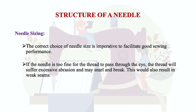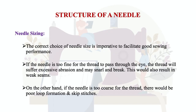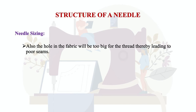If the needle is too fine for the thread to pass through the eye, the thread will suffer excessive vibration and may shrink and break, resulting in a weak seam. On the other hand, if the needle is too coarse for the fabric, the thread may get distorted, there will be poor loop formation, and the hole in the fabric will be too large for the thread, leading to a poor seam.